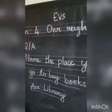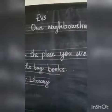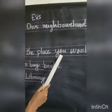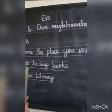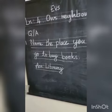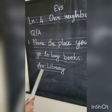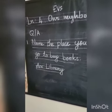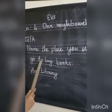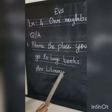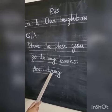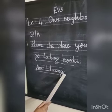EBS Lesson 4, Our Neighborhood, question and answer. First question: Name the place you would go to buy books. Answer: Library. Library, spelling: L-I-P-R-A-R-Y. Library.